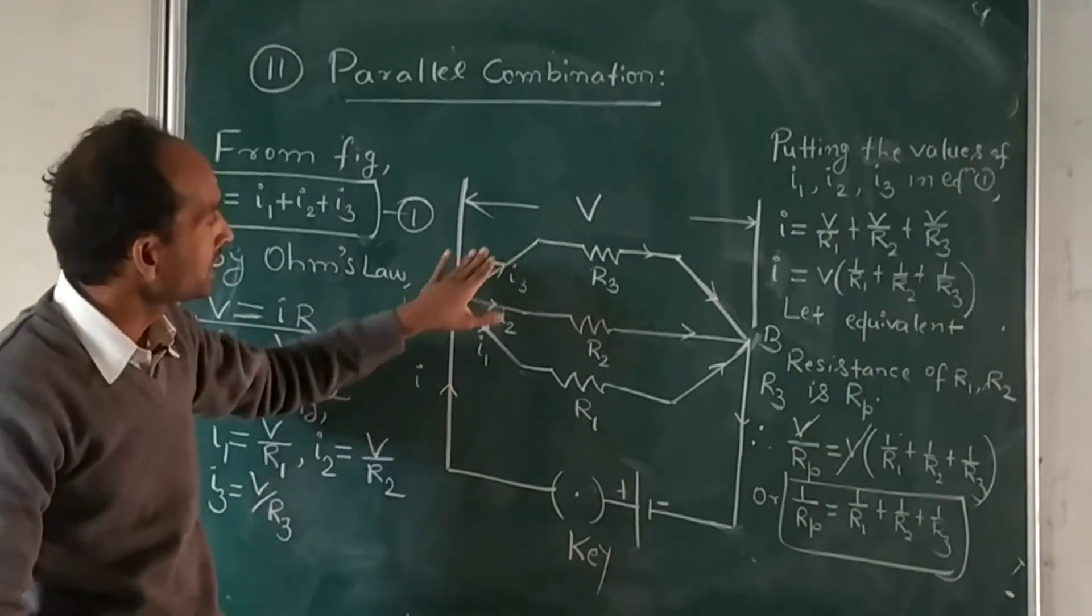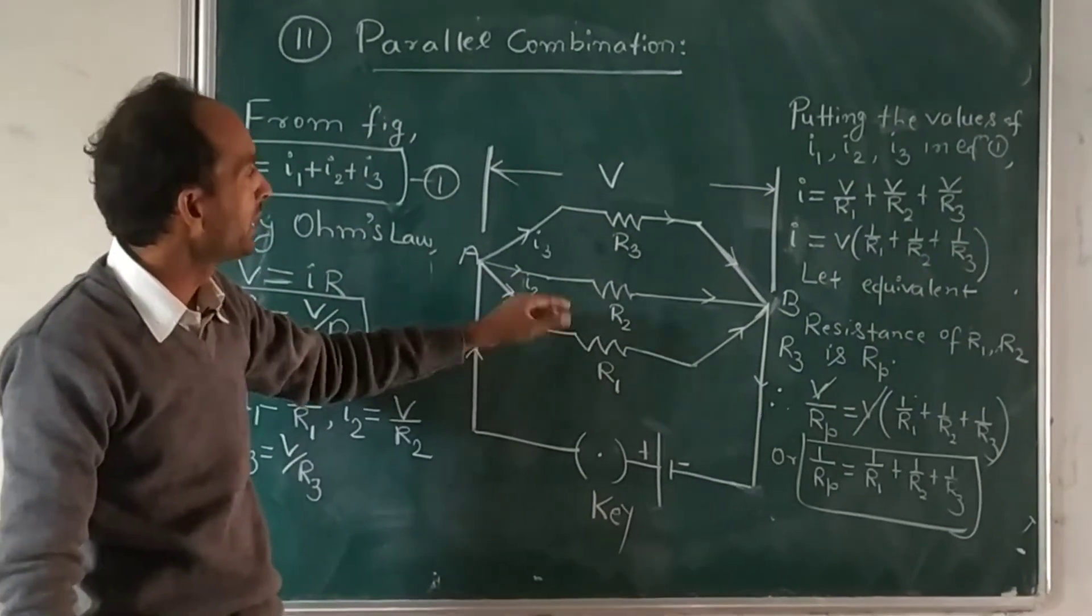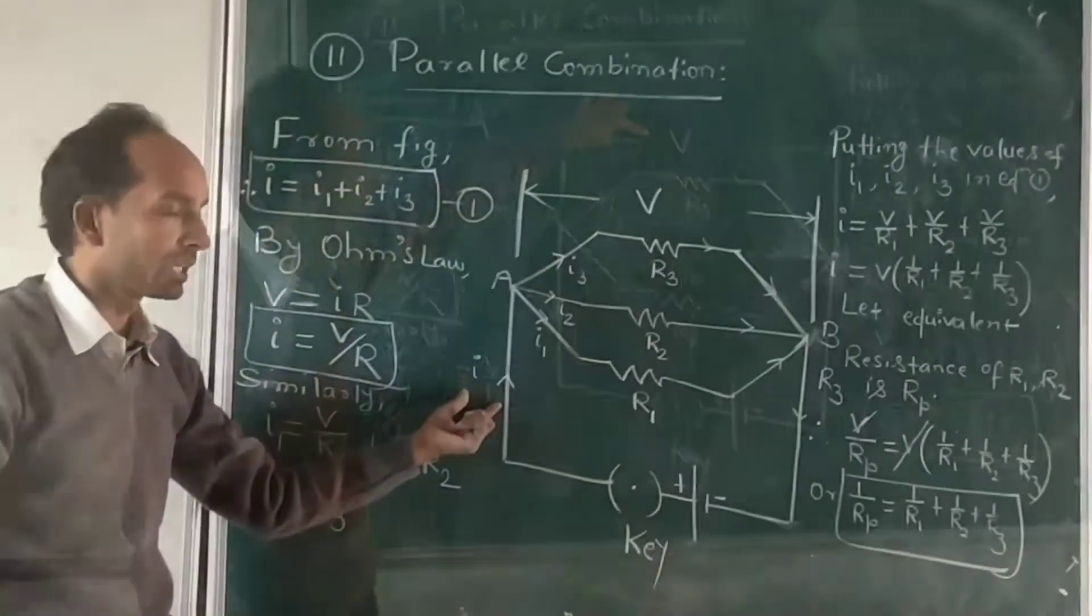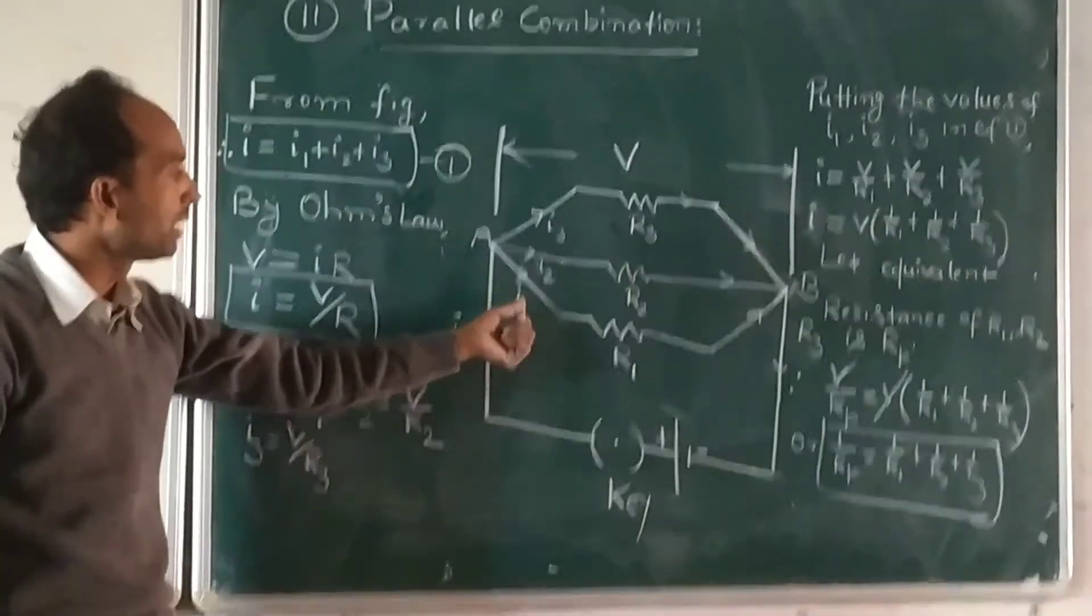Since all resistances are connected between two common points A and B, the current I equals I1 plus I2 plus I3. So it is taken as equation one.